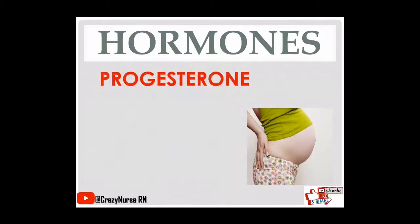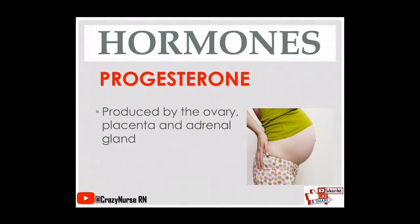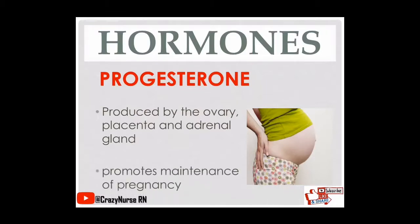Next, we have progesterone. It is produced by the ovary, placenta, and adrenal gland. It promotes maintenance of pregnancy. Progesterone is also called the hormone for pregnancy.